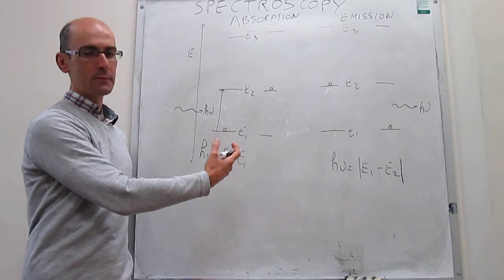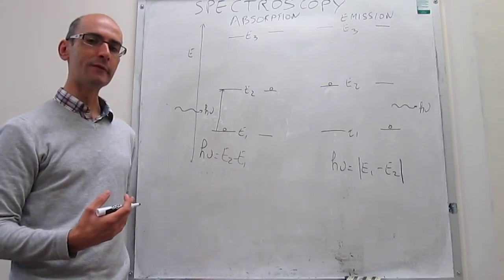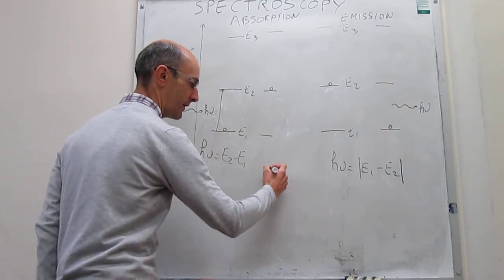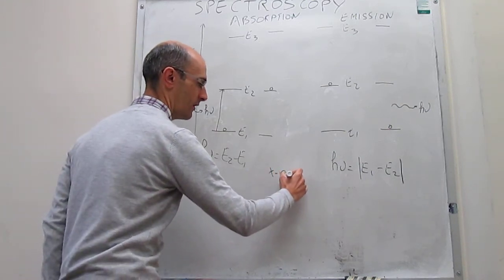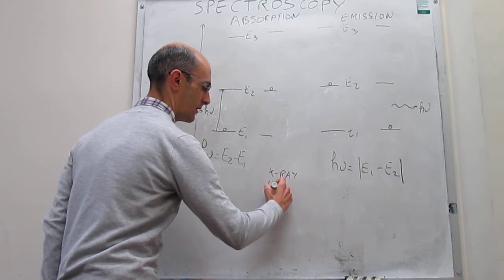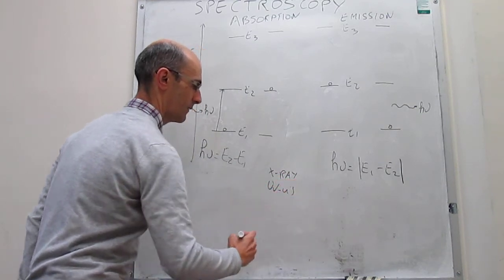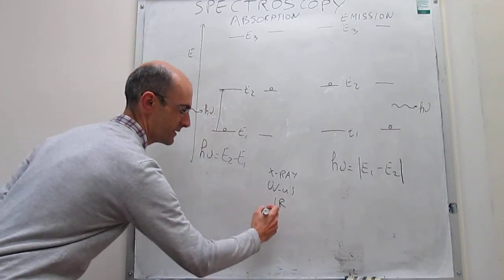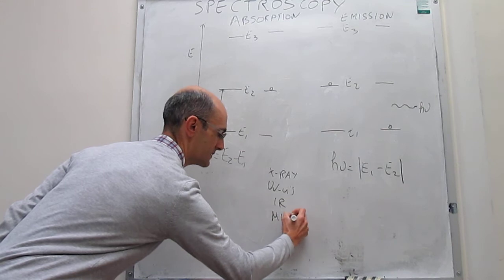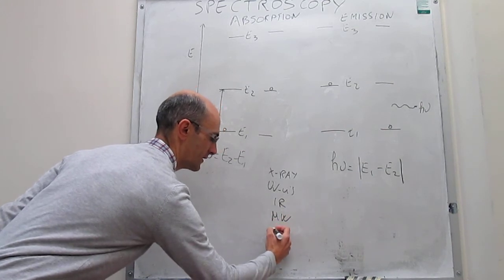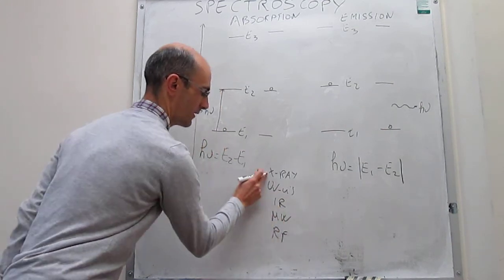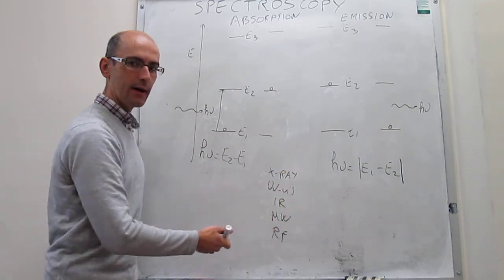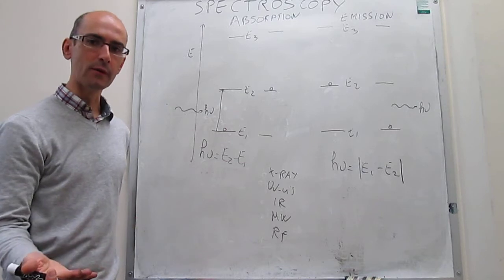Both absorption and emission spectroscopy can be performed with any type of photon, going all the way from X-ray and gamma ray down to radio frequency. We order photons in terms of decreasing energy across the electromagnetic radiation spectrum: X-ray, UV-Vis, infrared, microwave, and radio frequency. With each one of these types of photons you can perform spectroscopy — mostly absorption, but occasionally emission as well.